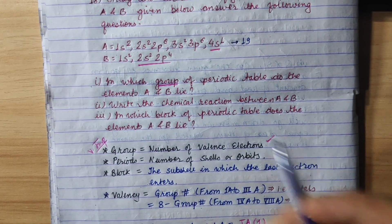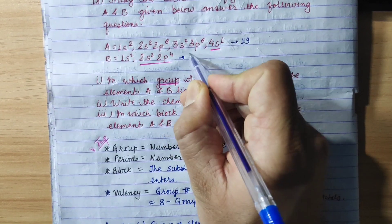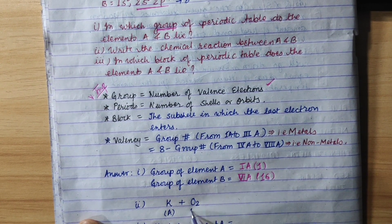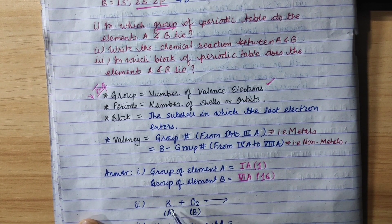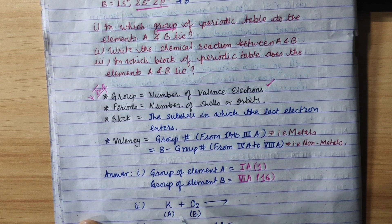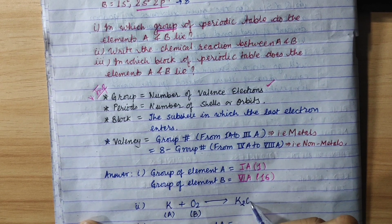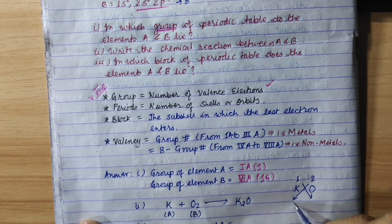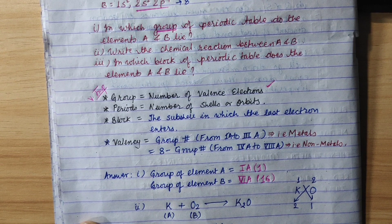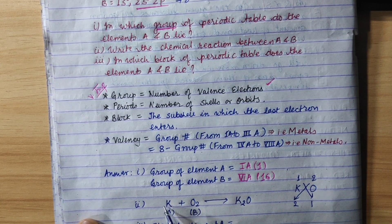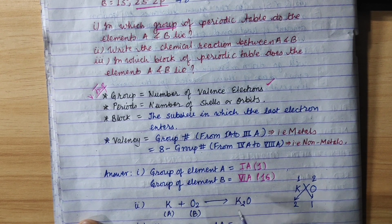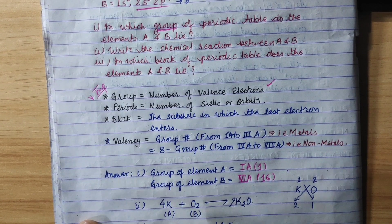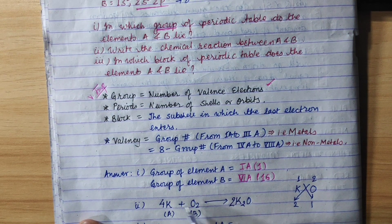For element B: 2 plus 2 is 4, 4 plus 4 is 8, giving atomic number 8, which is Oxygen. Oxygen is a diatomic gas, so we write O₂. Combining Potassium (an alkali metal) with Oxygen gives the corresponding oxide, Potassium oxide. Potassium has a valence of 1 and Oxygen is 2, so we need 2 Potassium atoms, giving 4 Potassium and 2 Oxygen to balance the equation.